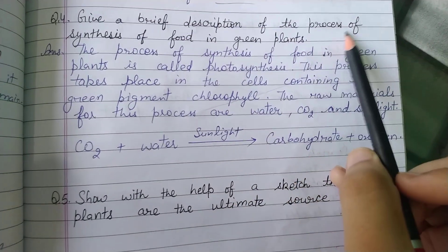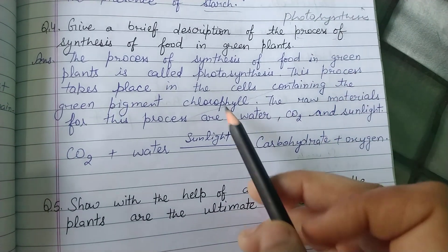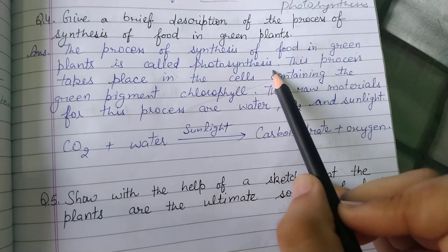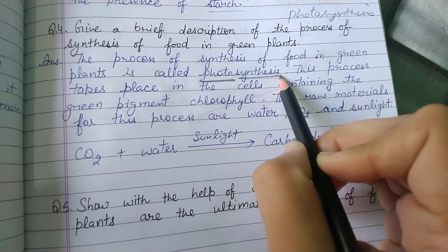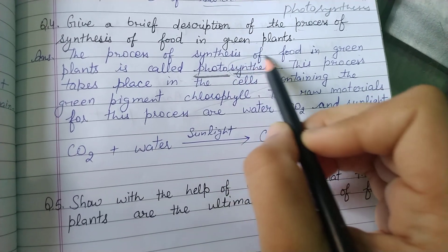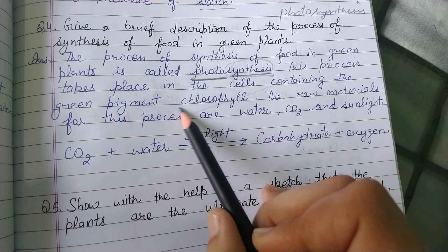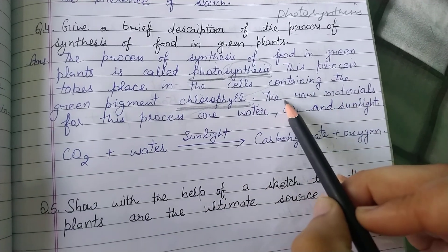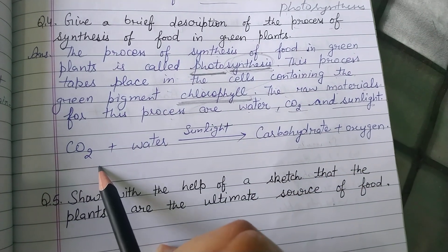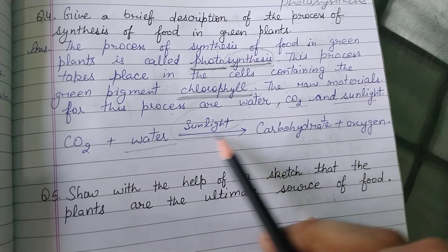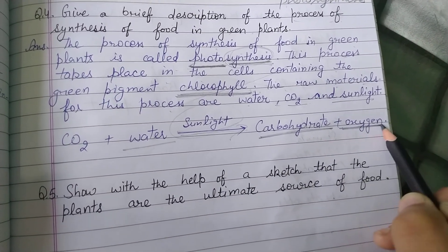Photosynthesis: briefly describe the process of food synthesis in plants. The process of synthesis of food in green plants is called photosynthesis. Photo ka matlab hota hai light, synthesis ka matlab hota hai prepare karna. This process takes place in cells containing the green pigment chlorophyll. The raw materials are water, CO2, and sunlight. Green plants chlorophyll ki presence mein food prepare karte hain — carbohydrates banate hain aur oxygen gas release karte hain.